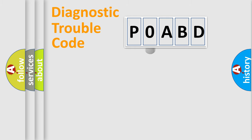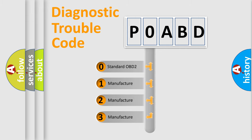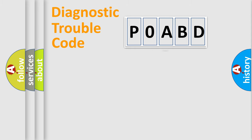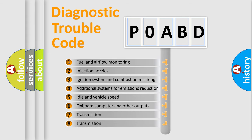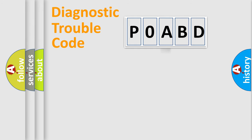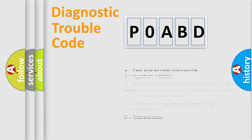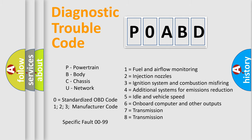This distribution is defined in the first character of the code. If the second character is expressed as zero, it is a standardized error. In the case of numbers 1, 2, or 3, it is a manufacturer-specific error. The third character specifies a subset of errors. This distribution is valid only for the standardized DTC code. Only the last two characters define the specific fault of the group, and this division is valid only if the second character is zero.